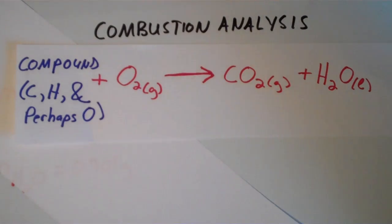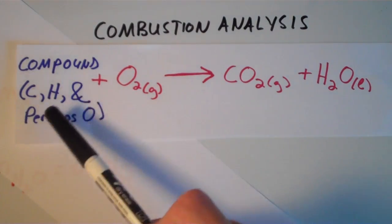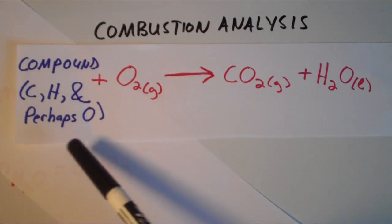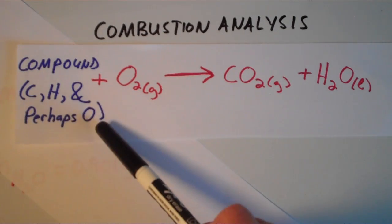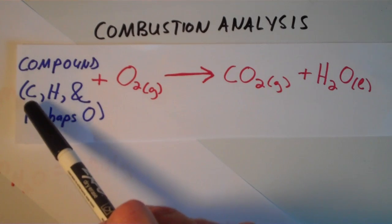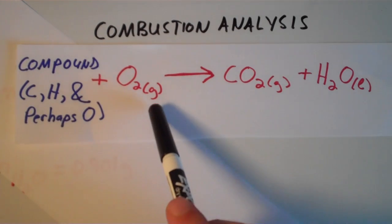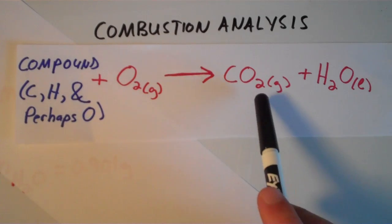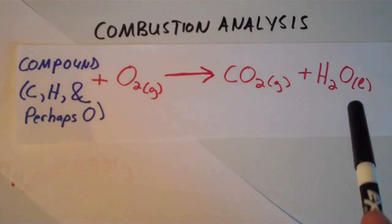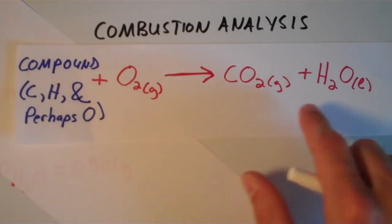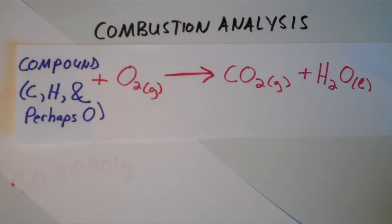Combustion reactions have the following form. You have some compound that contains carbon, hydrogen, and perhaps oxygen — it doesn't have to contain oxygen, but it definitely needs to have carbon and hydrogen. You burn it in O2 gas and the products are CO2 and H2O. The O2, CO2, and H2O are the same for every combustion reaction.